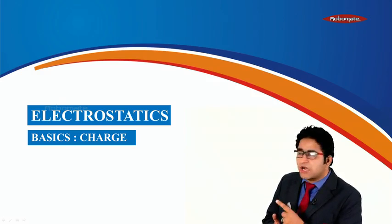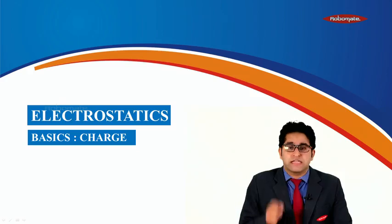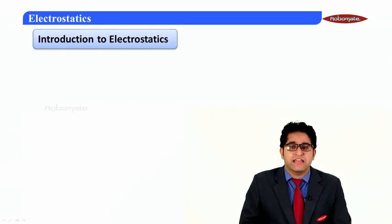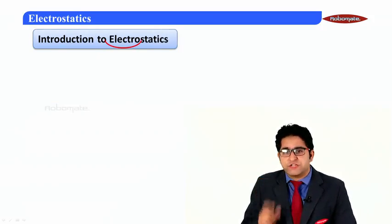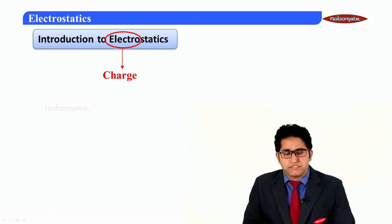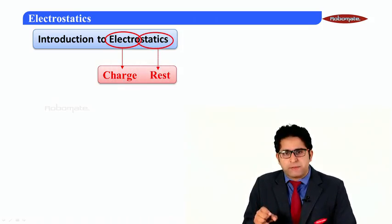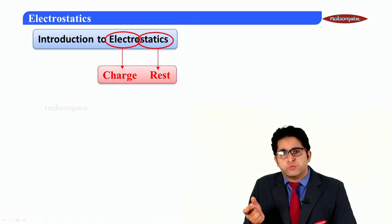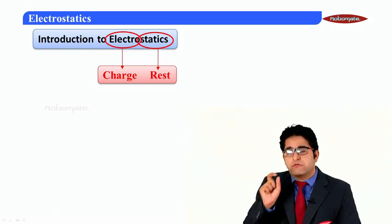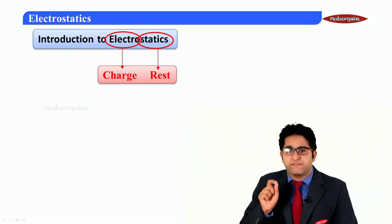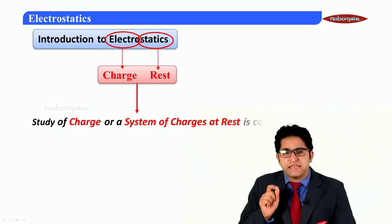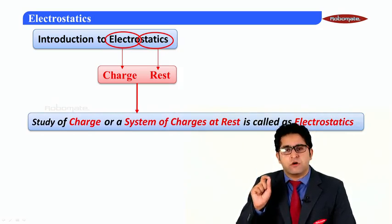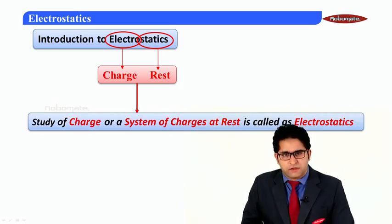Let us begin with the first module, where we will be learning the term called charge. But before that, let us analyze the word electrostatics. If I divide this word into two sections: the first is 'electro,' which refers to charge, and the second is 'static,' which means at rest. So electrostatics is defined as the study of charge or a system of charges at rest.